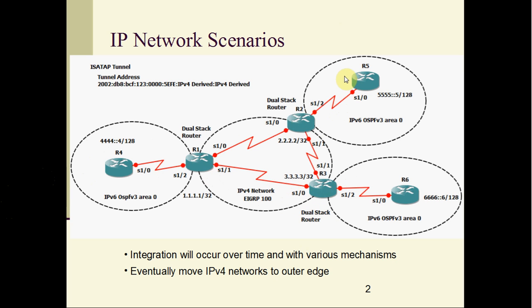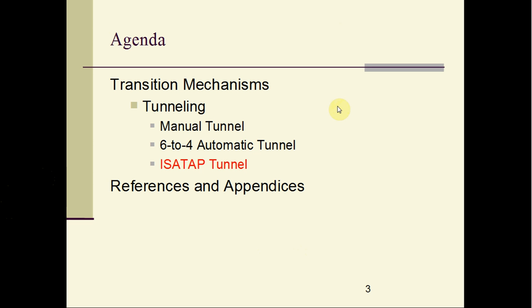The immediate solution to this problem is to configure tunneling between the dual stack routers, that is R1, R2 and R3. When we talk about tunneling, there are various ways we can configure tunneling: number one being the manual tunnel, second one is 6to4 automatic tunnel, and finally ISATAP tunnel. The 6to4 and ISATAP are automatic tunnels in nature, whereas manual tunnel is static.